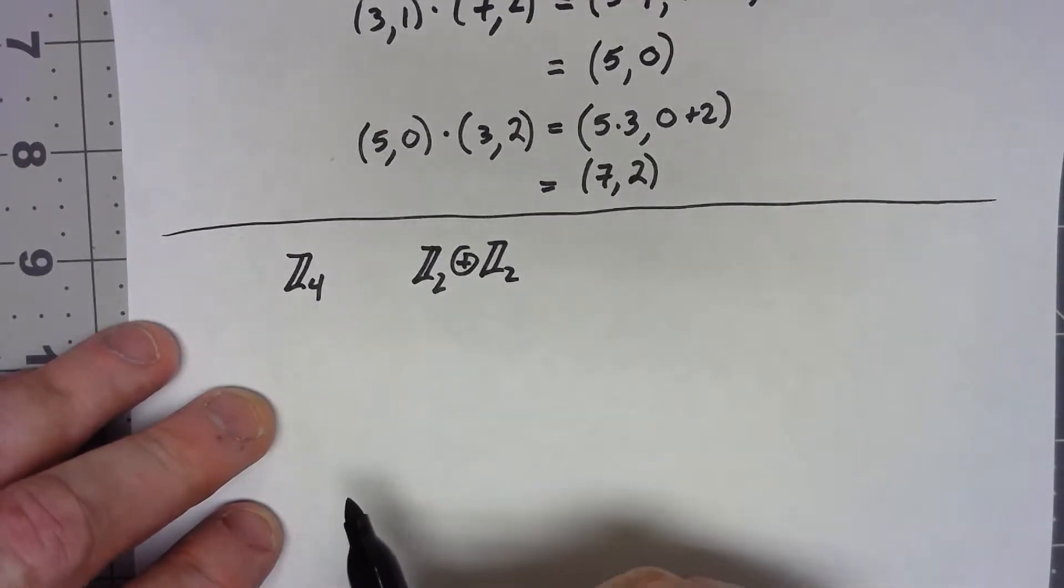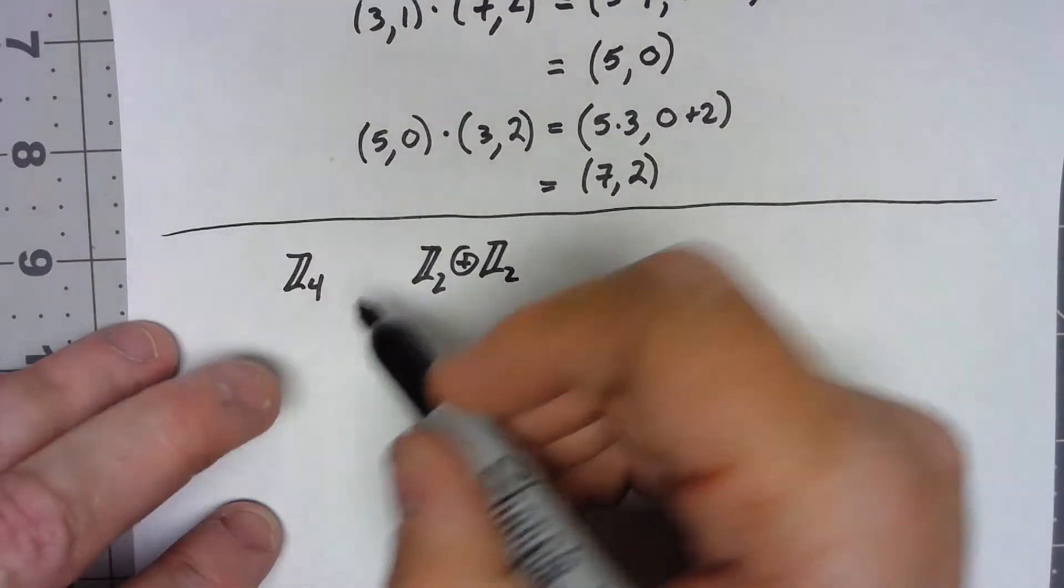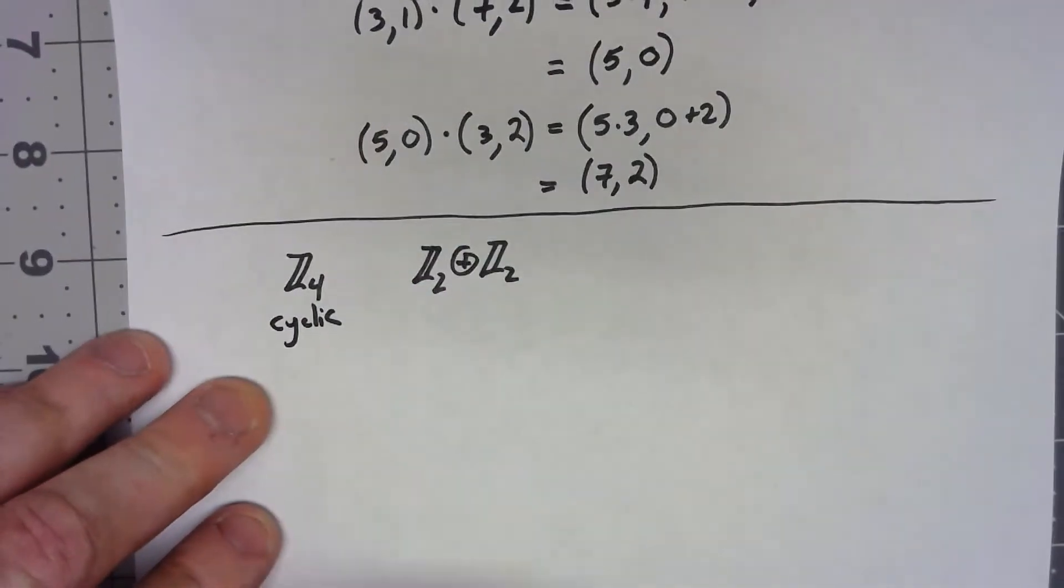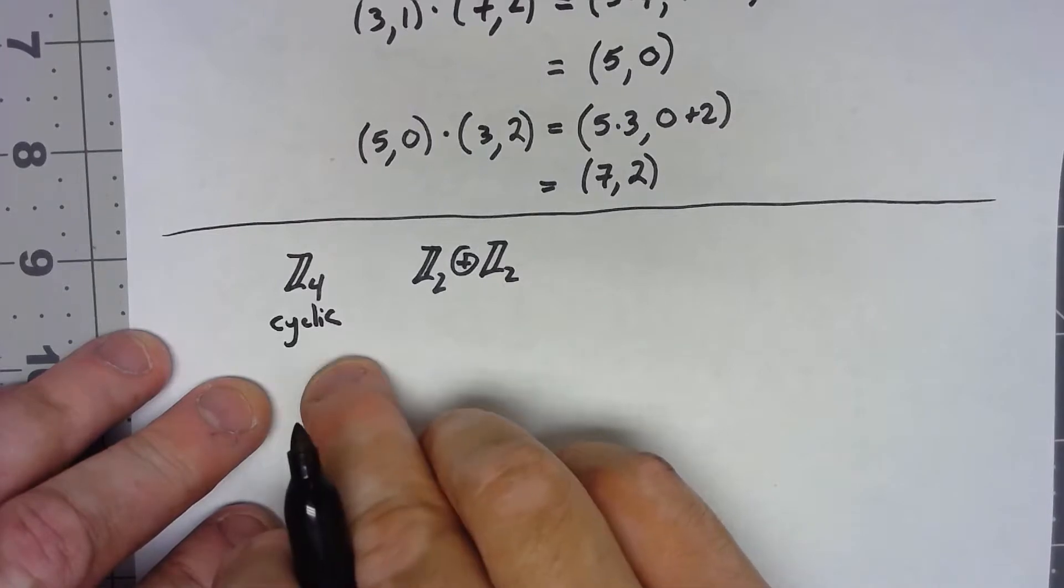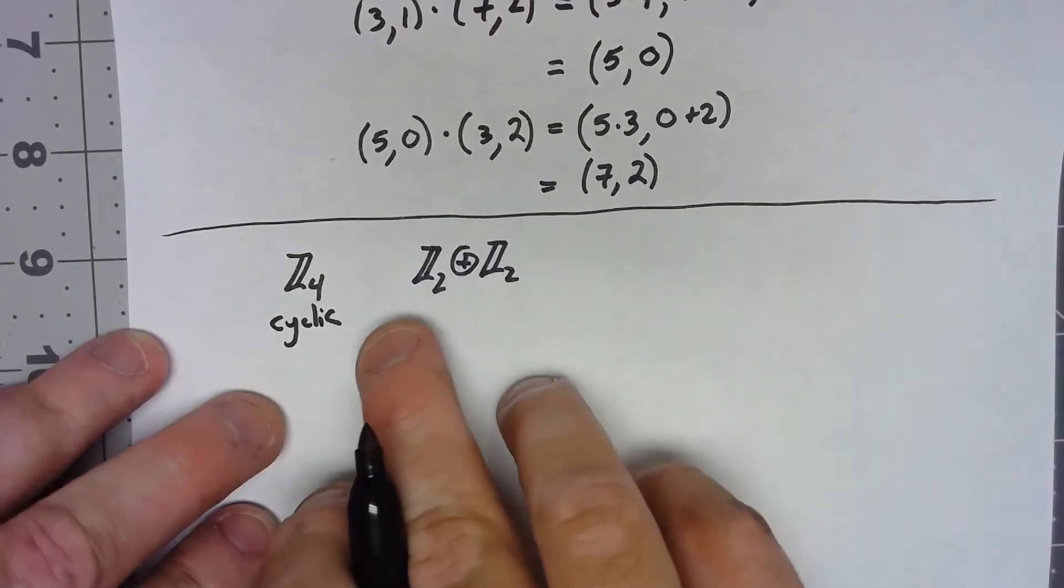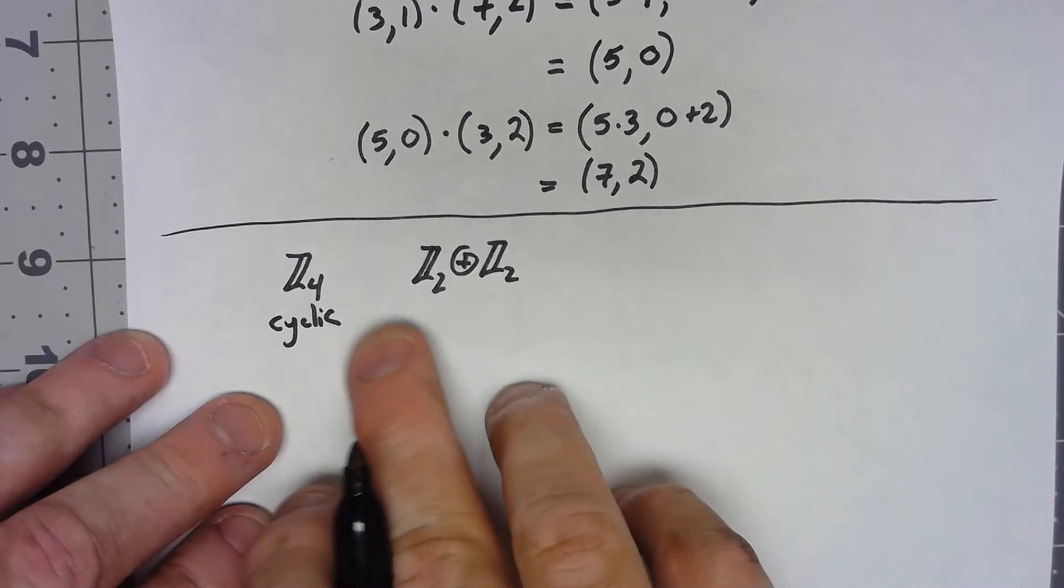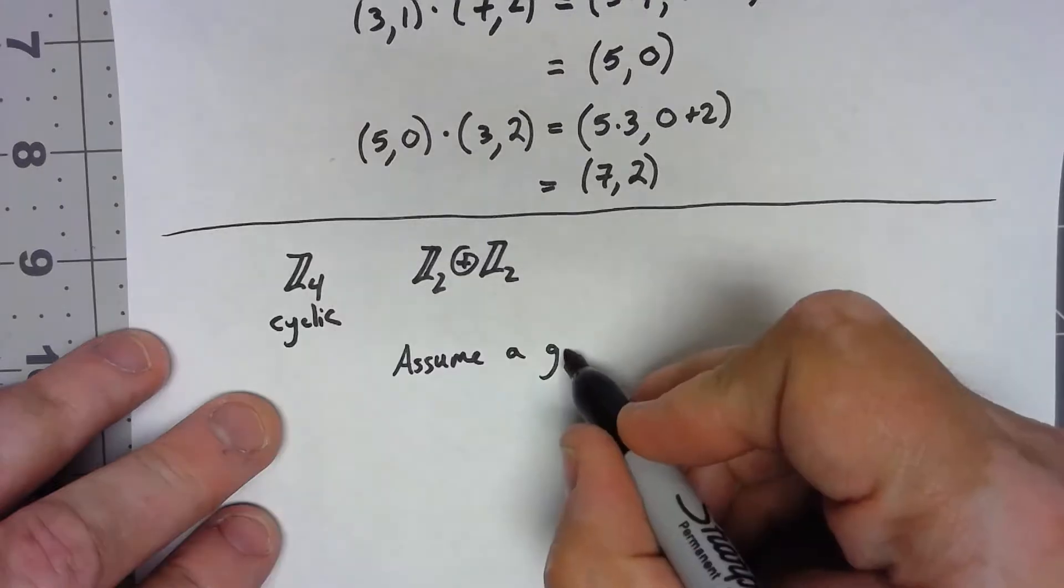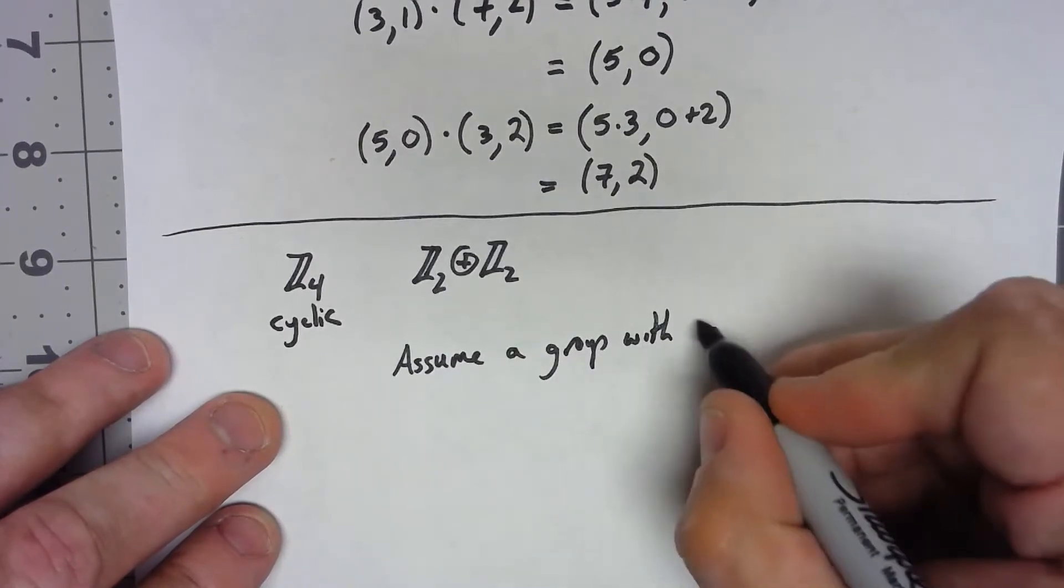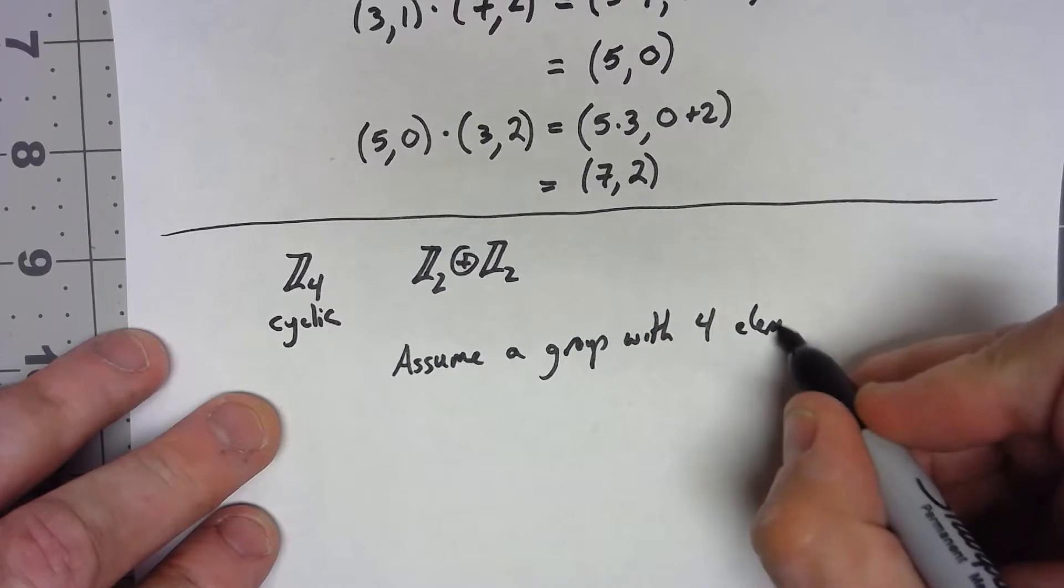Let's think about that for a second. Z4 is of course cyclic, and any cyclic group with four elements would be isomorphic to Z4. On the other hand, Z2 plus Z2, a group with four elements, is not cyclic.